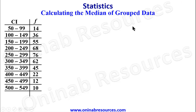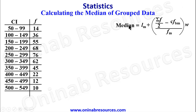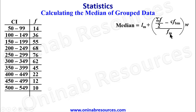We start from the formula for median of grouped data: Median = Lm + ((ΣF/2 − CFbf) / Fm) × h, where Lm is the lower class boundary of the median class, ΣF is the sum of all frequencies, CFbf is the cumulative frequency before the median class, Fm is the frequency of the median class, and h is the class width.